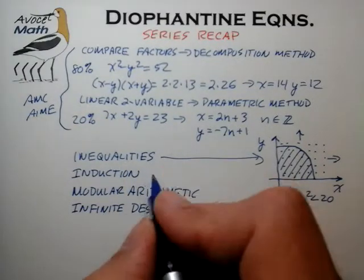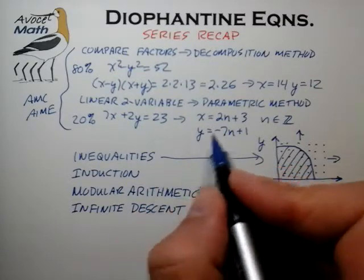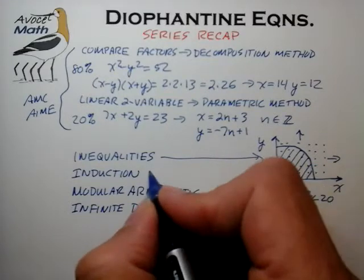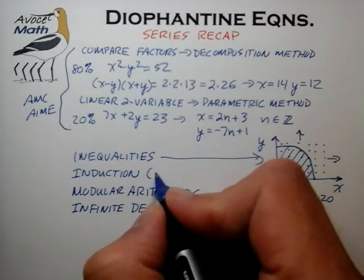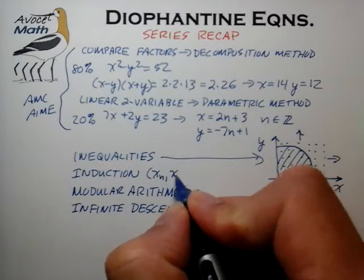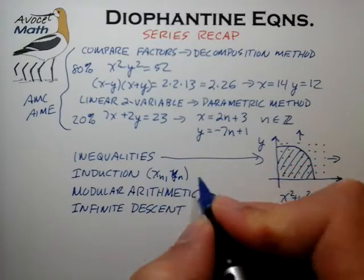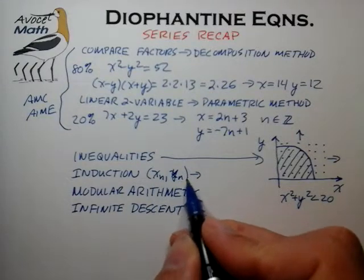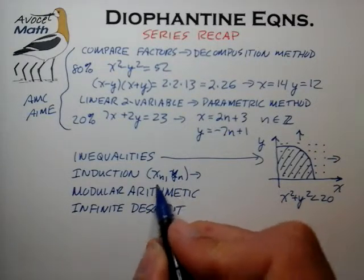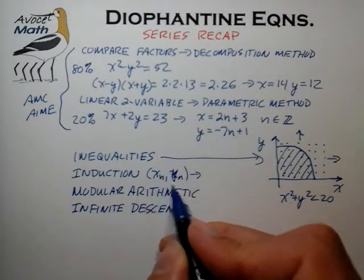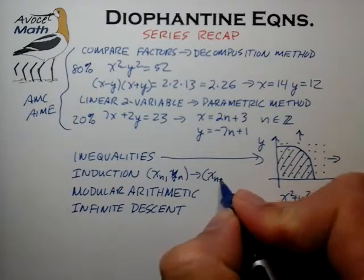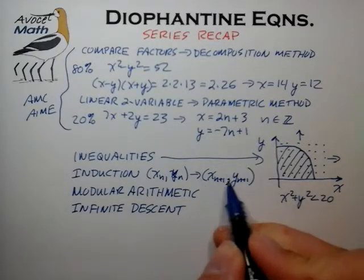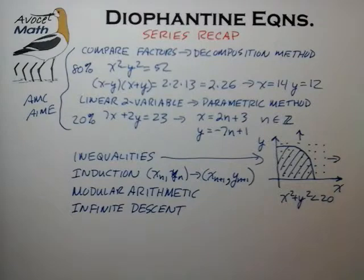The induction method refers to a kind of generalization of the parametric method, where instead of writing x and y in terms of n, we write the solutions for generating x(n) and y(n) in terms of the prior x(n) and y(n). We take a solution we know to be true to generate the next solution that we can then prove to be true. By repeating this process, we can generate an entire solution set.